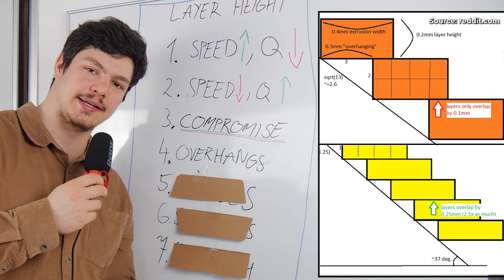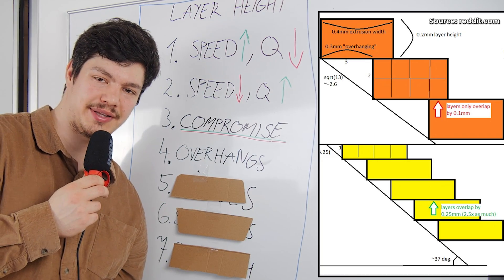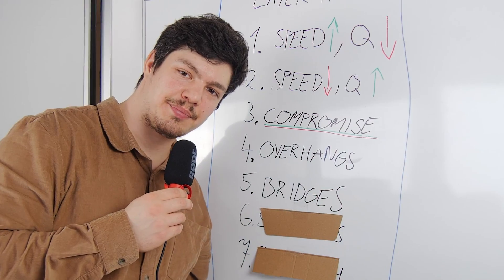Overhangs with steeper layer lines will benefit from lower layer heights, reducing the risk of drooping or sagging when printing without supports. Thicker bridges print better.